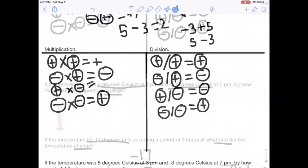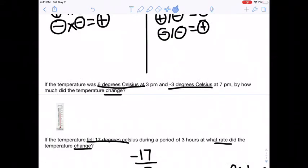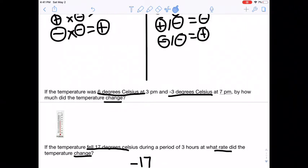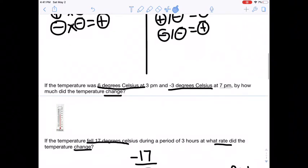But that's a little bit beyond. So for our first problem, we have if the temperature was six degrees Celsius at 3 p.m. and negative three degrees Celsius at 7 p.m. by how much did the temperature change? So it's change. So we know we have to subtract the initial amount here, the six degrees Celsius, by the final amount, which is the negative three degrees Celsius.